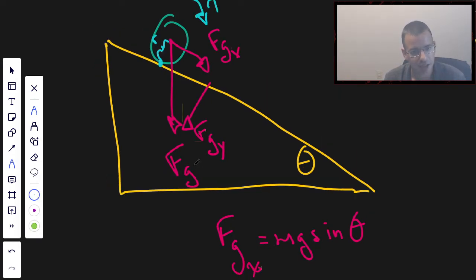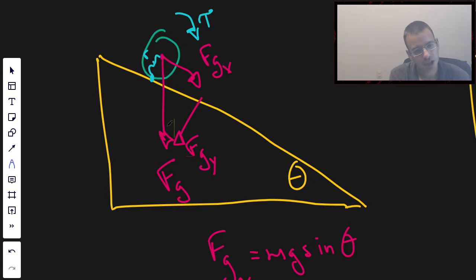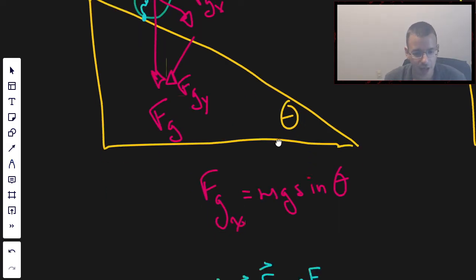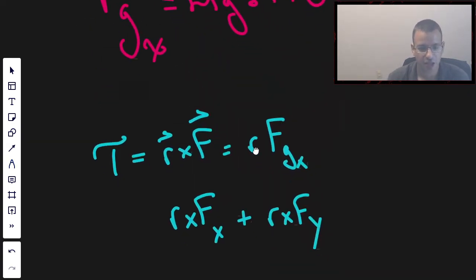Now this is a little bit more nuanced than is probably necessary, but what I'm saying here is we've decomposed this force gravity vector into X and Y. The FGX is going to be perpendicular to R. FGY is going to be parallel. And since the cross product is a measure of how perpendicular two vectors are, this one just disappears, goes to zero.